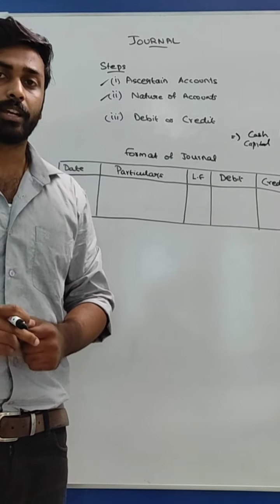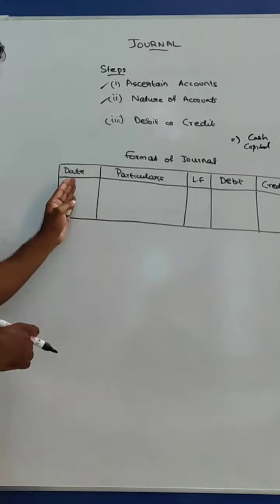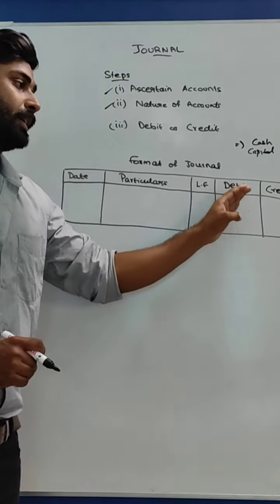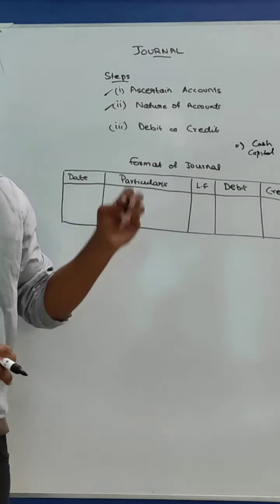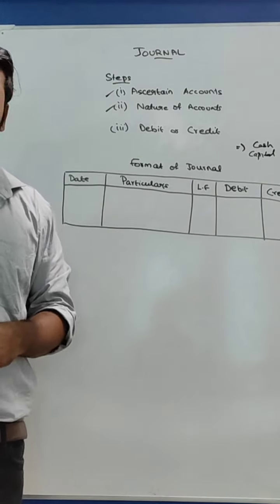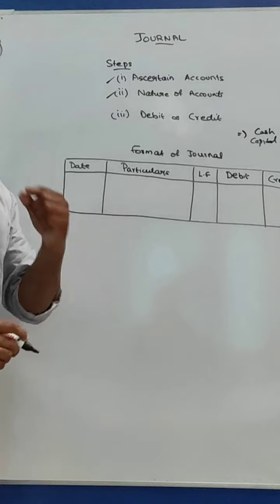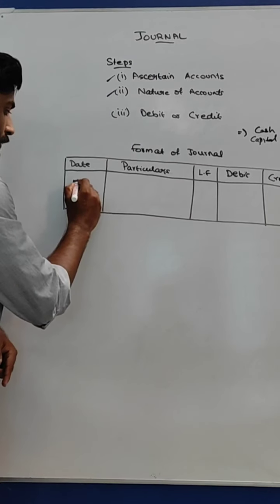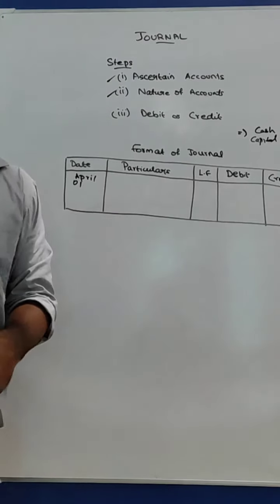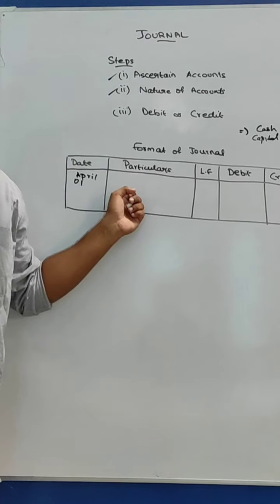Now we can discuss the format of the journal. The journal has five columns: date, particulars, ledger folio (LF), debit, and credit. The date column records the date of occurrence of the transaction. For example, if we are investing the amount into the business on 1st April, we write April 1 in the date column.